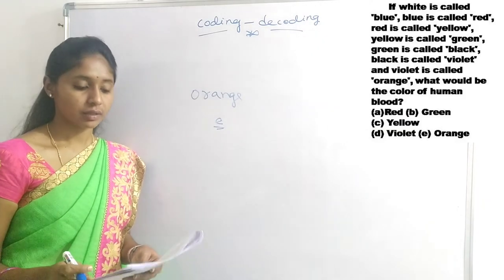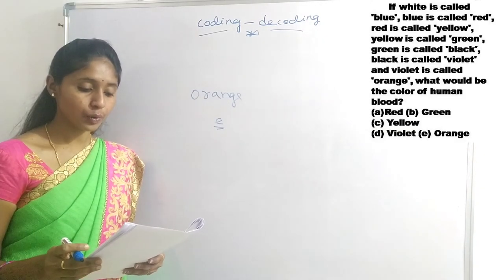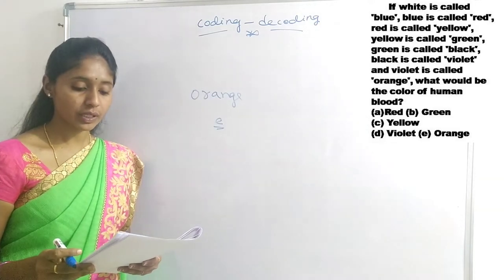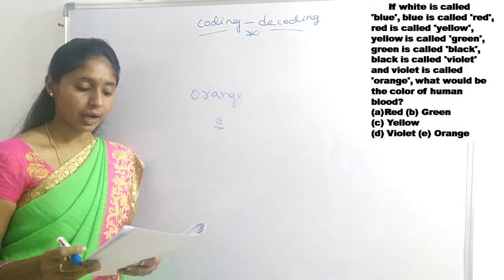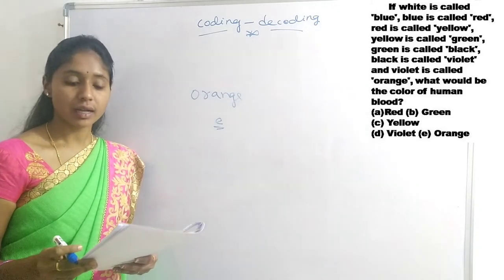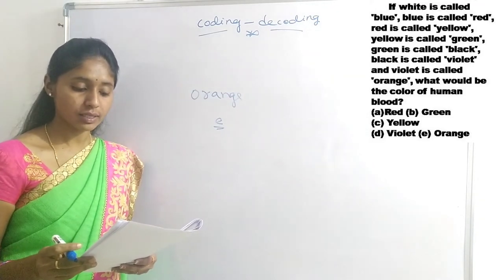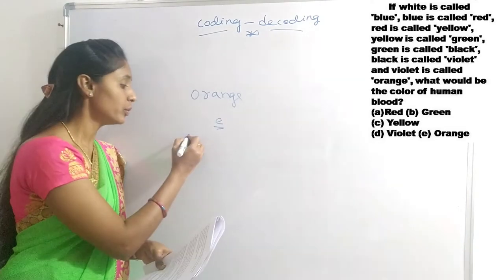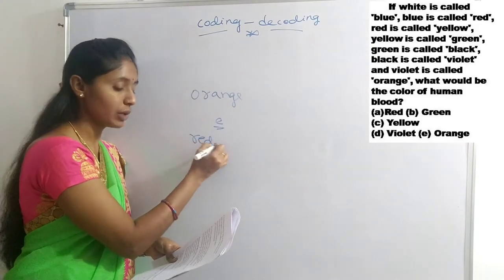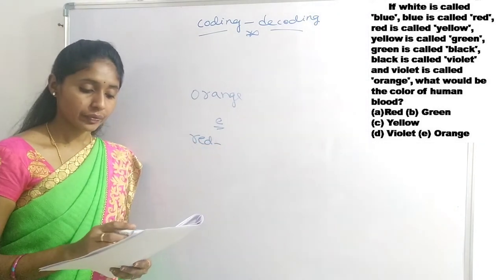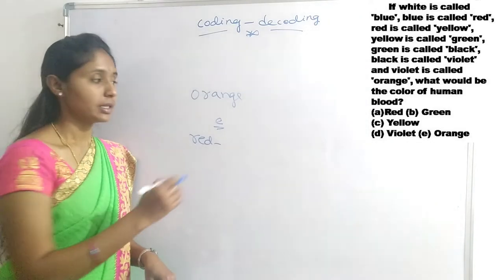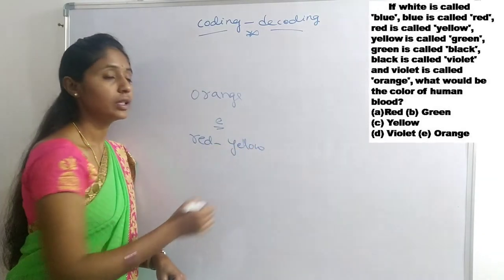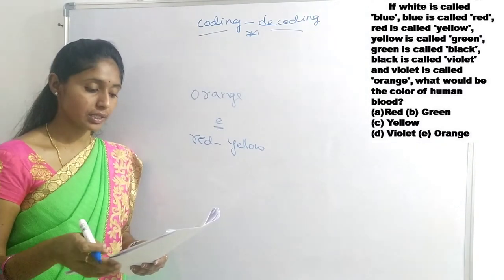Next question: If white is called blue, blue is called red, red is called yellow, yellow is called green, green is called black, black is called violet, and violet is called orange — what would be the color of human blood? Blood is red, but in this code language red is called yellow, so blood color is yellow — option C is the right answer.